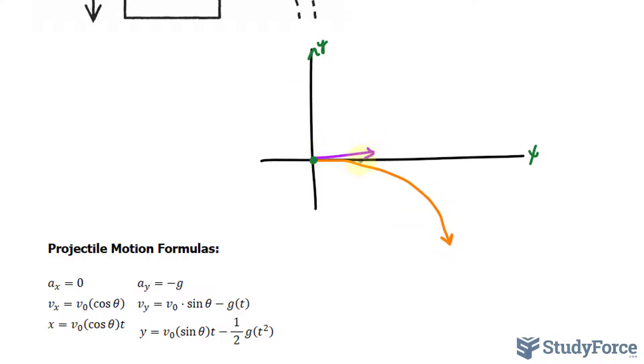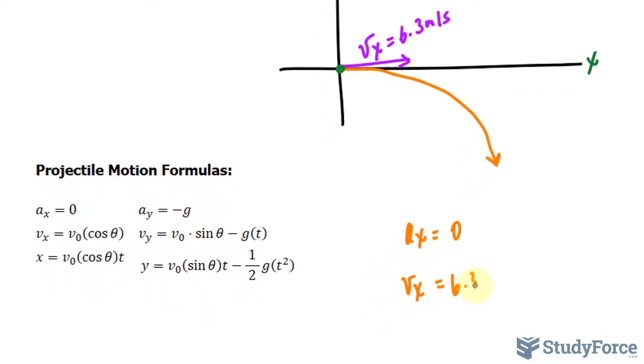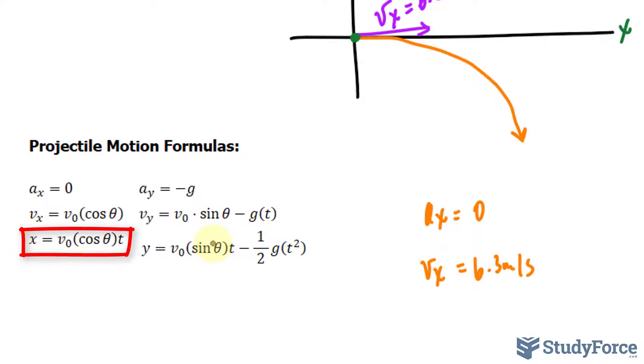The initial speed along the horizontal, vx, is 6.3 meters per second. That's also the initial speed. Using the formulas on screen, we'll fill in what we know. The acceleration along the x-axis ax equals 0. vx equals 6.3 meters per second. And x, which is the distance the stream travels, that's what we're looking for, equals v0(cos θ)t. This equals vx times t, so 6.3 meters per second times time. If we can find the time and substitute it, we can find the distance.